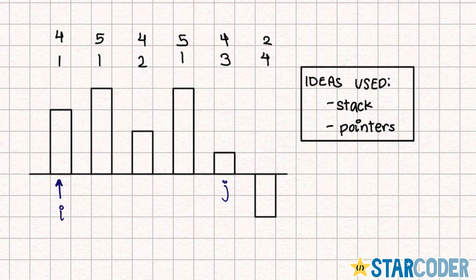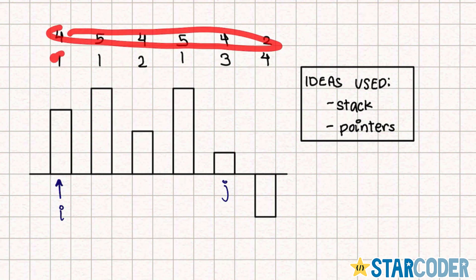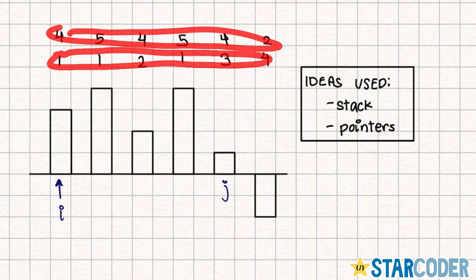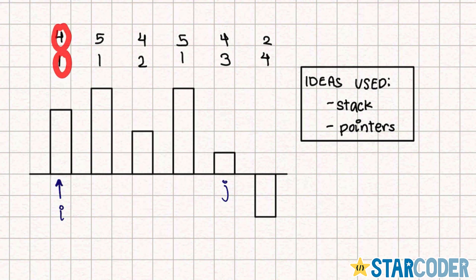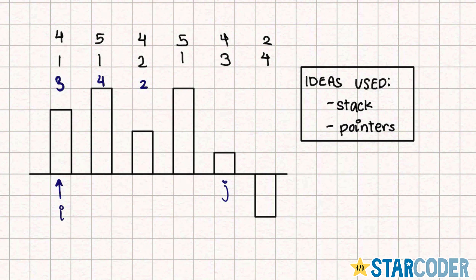Basically, using our current values and the values we want to obtain, we make a new array of the difference between the value we want and the value we have — our current value minus the target value. So for four and one, that would be three; for five and one, it would be four. We create an array representing how much we need to increase or decrease each current value by.